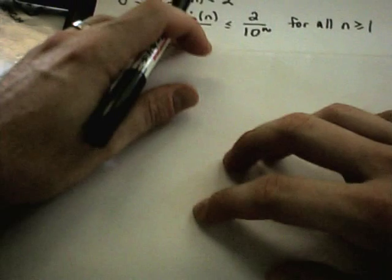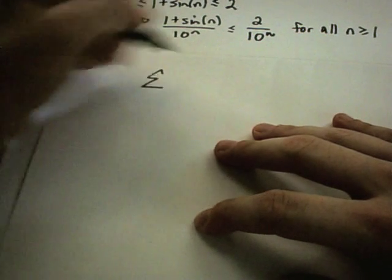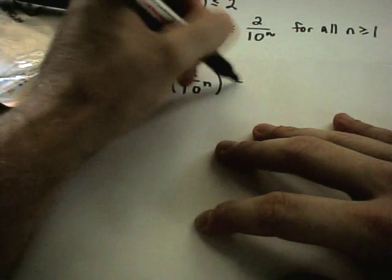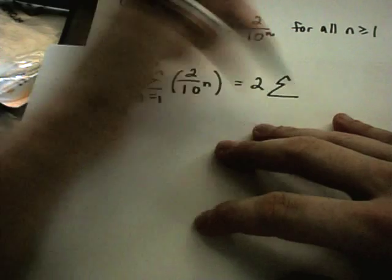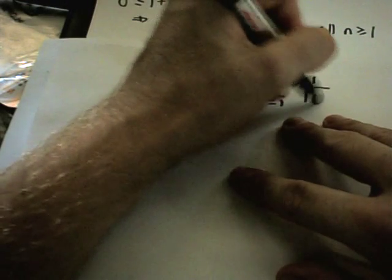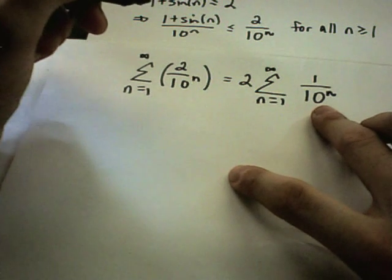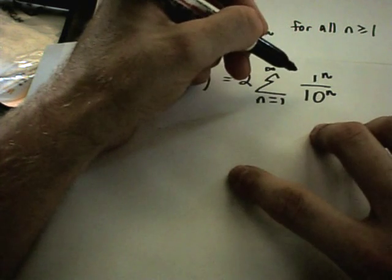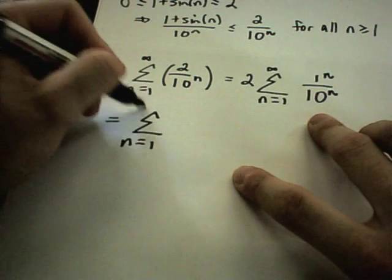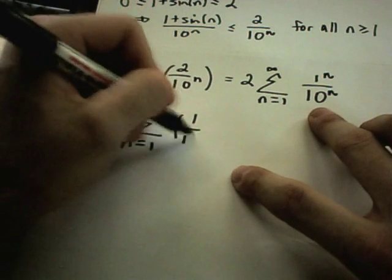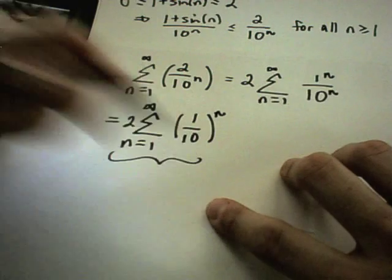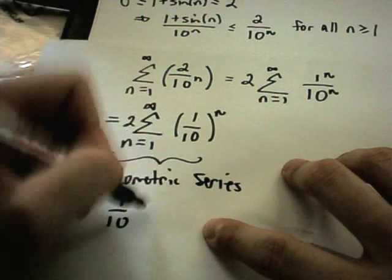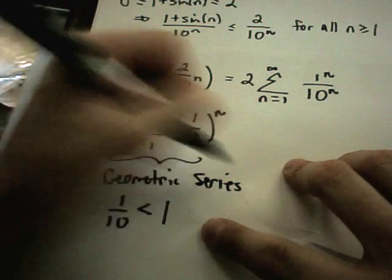Well, if you think about the series 2 over 10 to the n, you can factor the 2 out since it doesn't have an n on it. That leaves 1 over 10 to the n. You can write 1 as 1 to the n, because 1 to any power is still 1. So I can rewrite this as 2 times 1/10 raised to the n. This is now a geometric series, and it converges because 1/10 is smaller than 1.